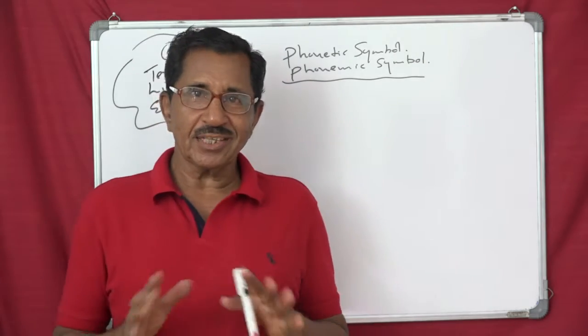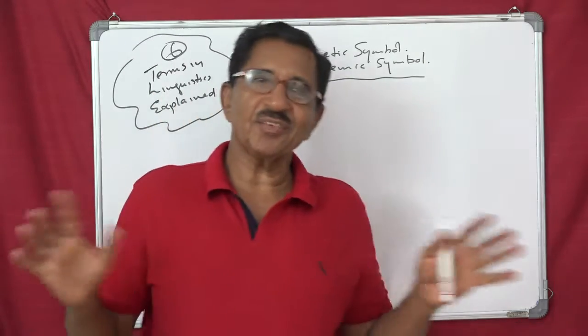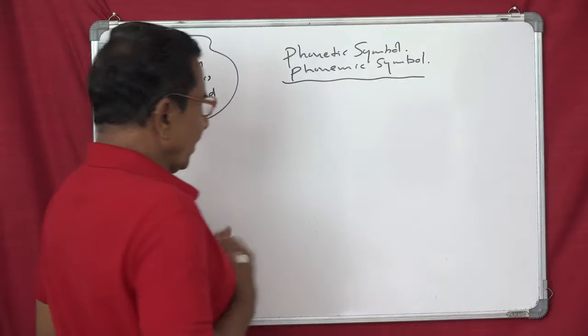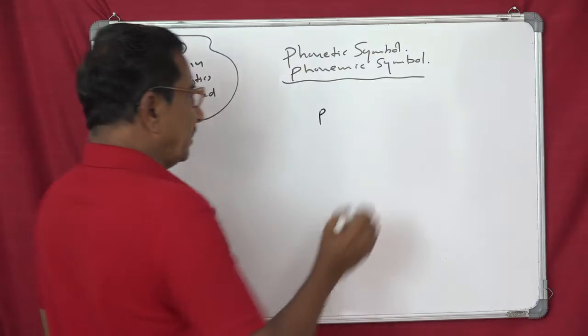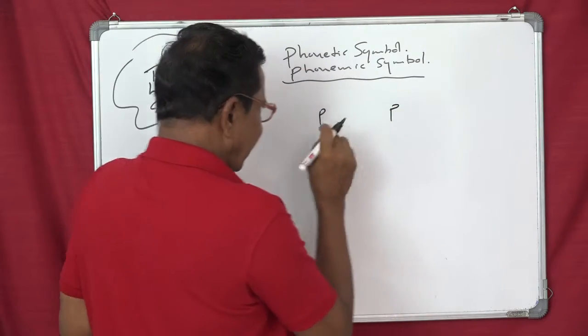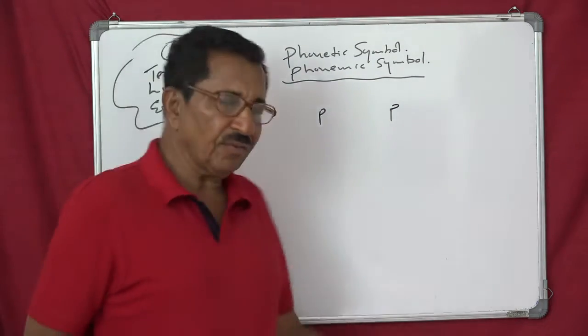The interesting thing is that both they look alike, not different at all. For example, if you write per like this and per, this is a phonetic symbol and as well as a phonemic symbol.